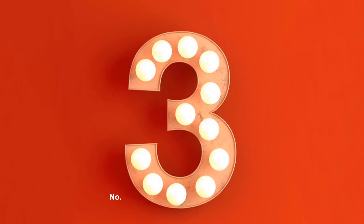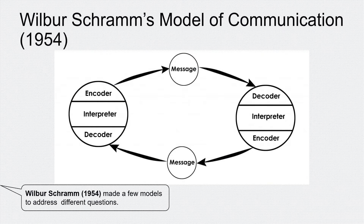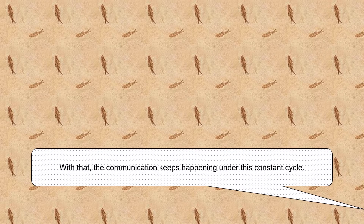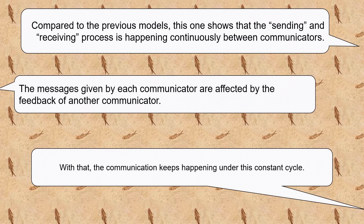Number 3: Wilbur Schramm's model of communication, 1954. Schramm made a few models to address different questions. This is one of the models developed around the idea of communication as a system of constant feedback. With that, communication keeps happening under this constant cycle. Compared to the previous models, this one shows that the sending and receiving process is happening continuously between communicators, and the messages given by each communicator are affected by the feedback of another.